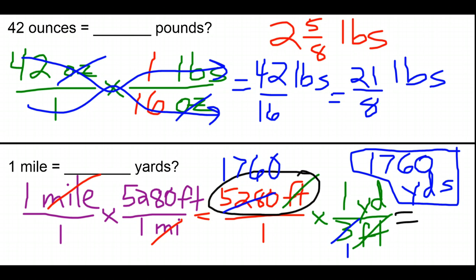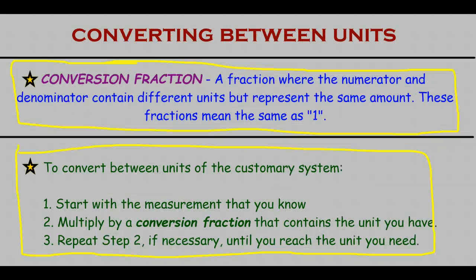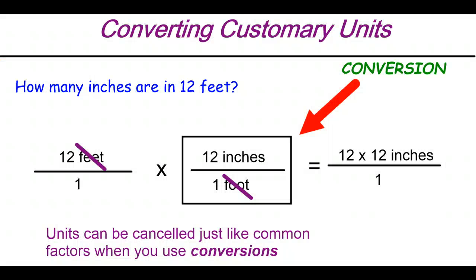Quickly to review: we have fractions we call conversion fractions. Conversion fractions are fractions where the numbers don't seem to indicate 1, but the units added to them mean that the numerator and denominator represent the same weight, the same distance, or the same capacity. To convert between units of the customary system, we use these conversion fractions so that when we multiply our conversion fraction by the unit we have, we can cancel the units just like common factors. 12 feet times 12 inches per 1 foot is the same as 12 times 12, or 144 inches.